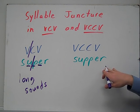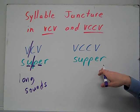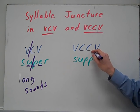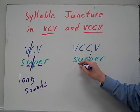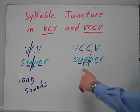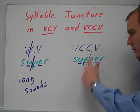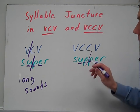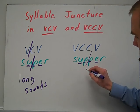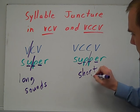And then over here you have vowel-consonant-consonant-vowel, and you have 'supper.' In this case, your juncture is right here — vowel, consonant, consonant, vowel. So your two consonants are together, and your juncture comes between them. Listen again: 'supper.' So in this case, you have a short sound.